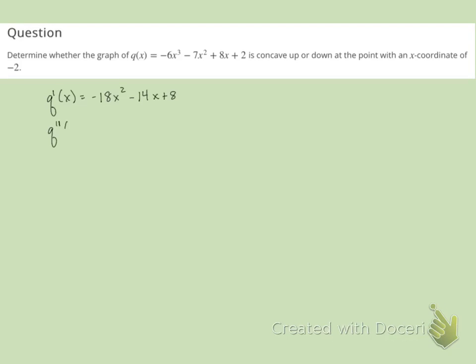And q double prime, the second derivative, is going to be negative 36x minus 14.